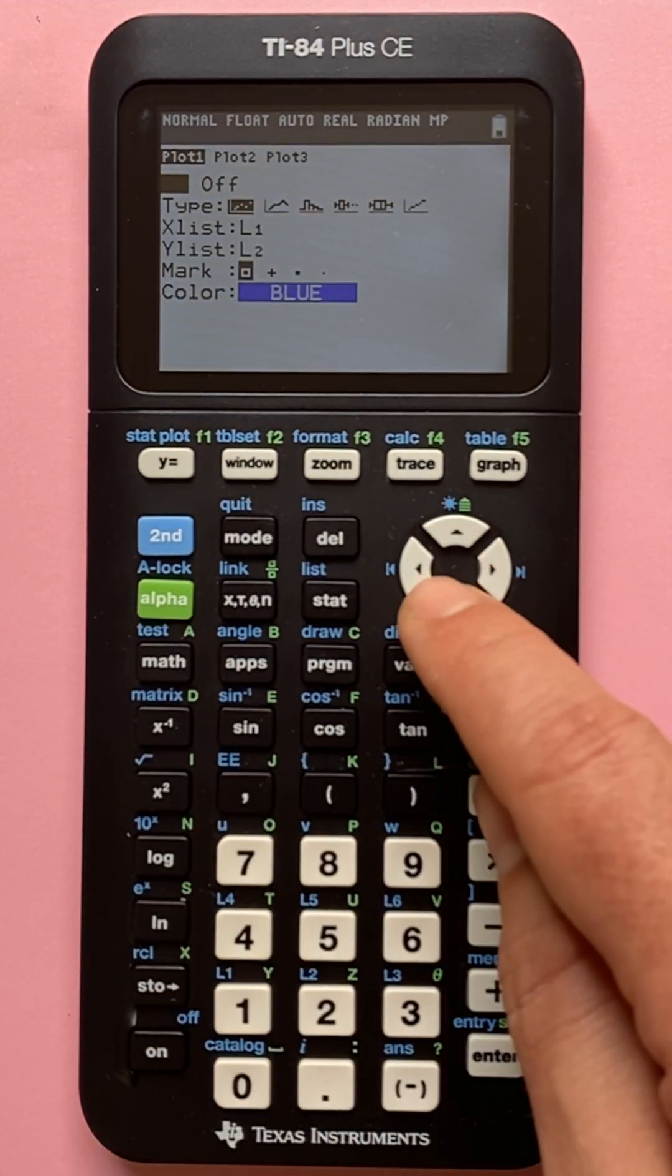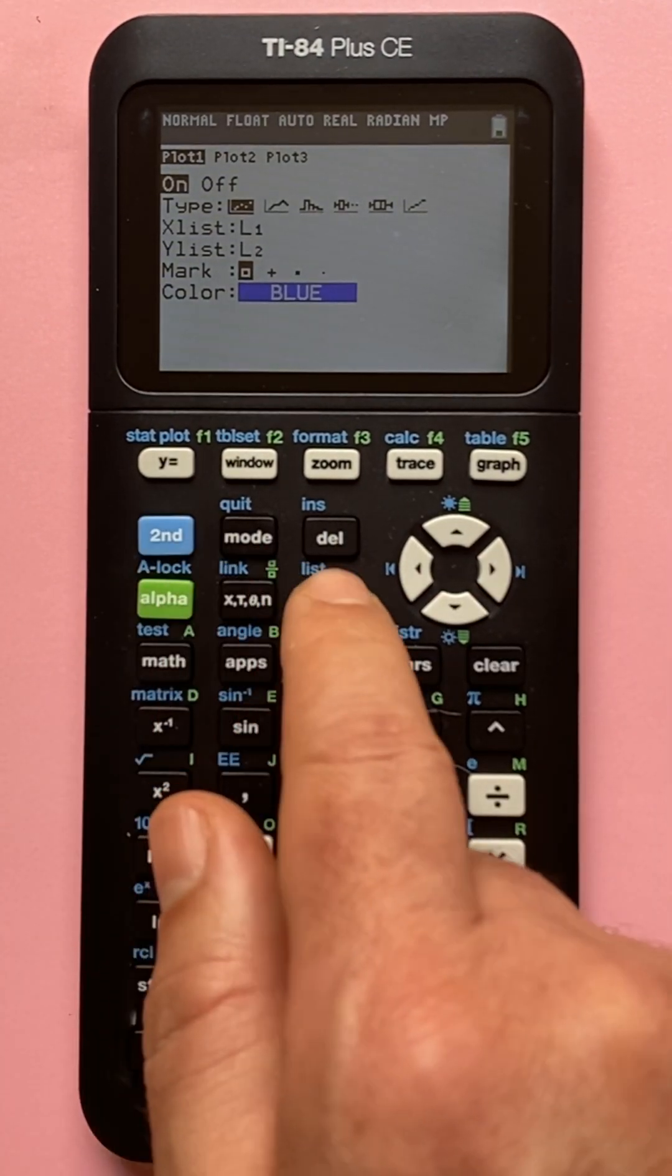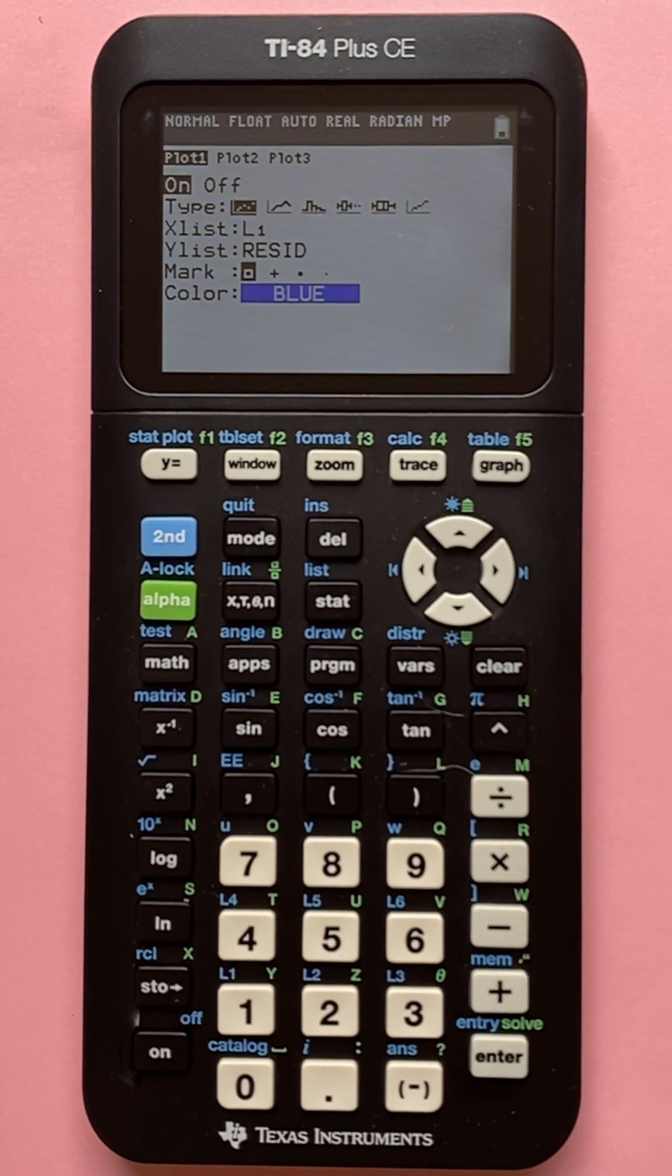I'm going to go back to stat plot, and I'm going to go down to my y list. If you go to second list, hit seven, and your residual list will come up right there.